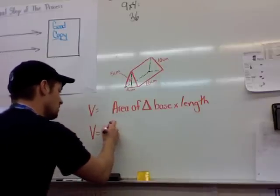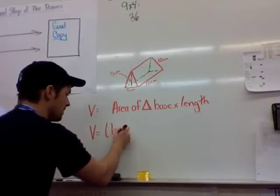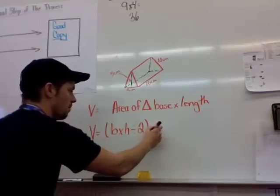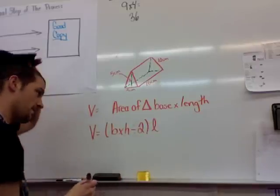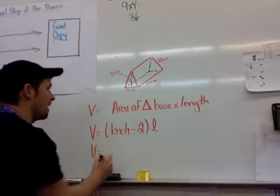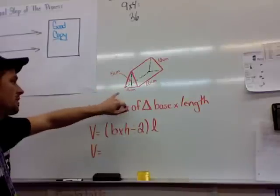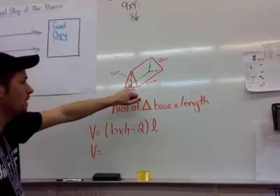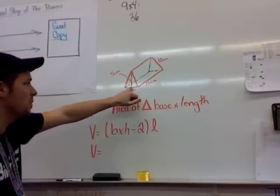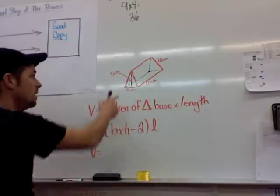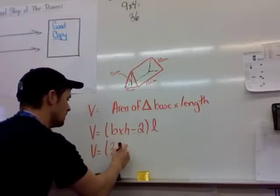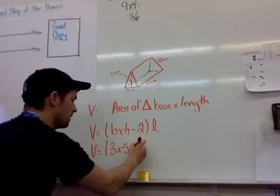And so the way we're going to do this is we're going to go bracket base times height divided by 2 multiplied by the length. So in this particular shape that we have here, triangular prism, the base is 3 cm. The height, which is, as you hopefully remember, comes from a 90 degree angle from the base up to the tip of the triangle. And we mark that at 5 cm. And so that's going to be 3 times 5 divided by 2.